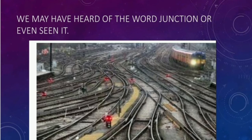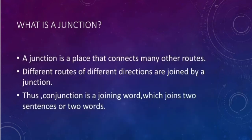We may have heard of the word junction or even seen it. As you can see in the picture, there is a train coming and there are so many tracks connected to each other. A junction is a place that connects many other routes — different routes of different directions are joined by a junction. Thus, a conjunction is a joining word which joins two sentences or two words.